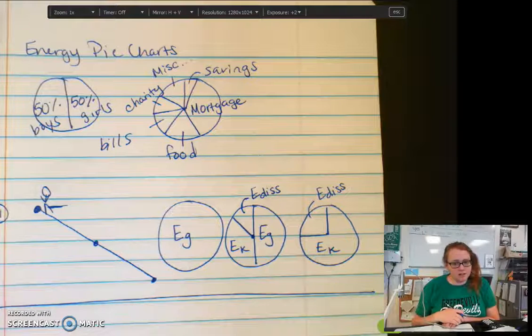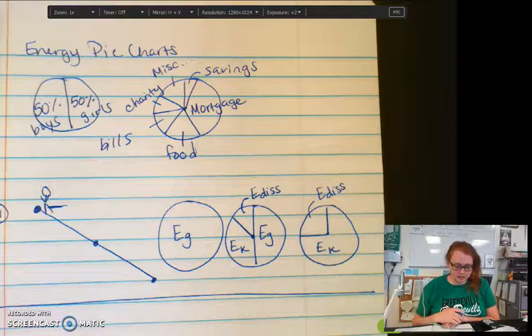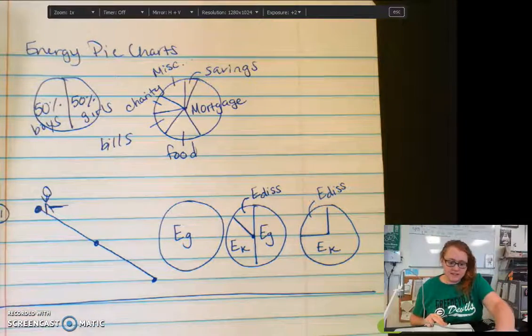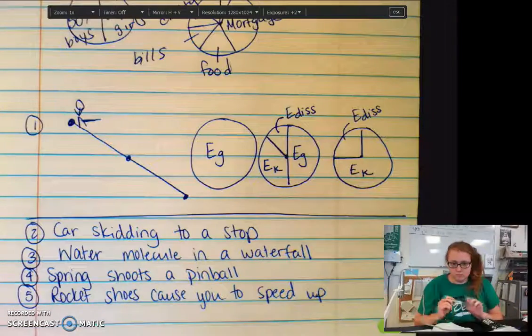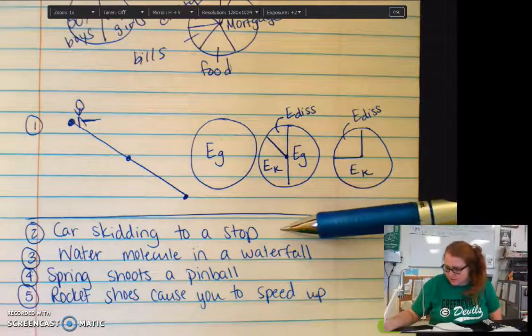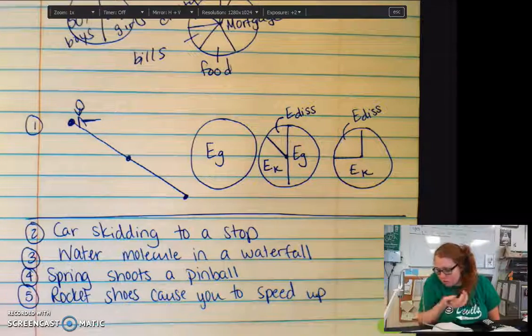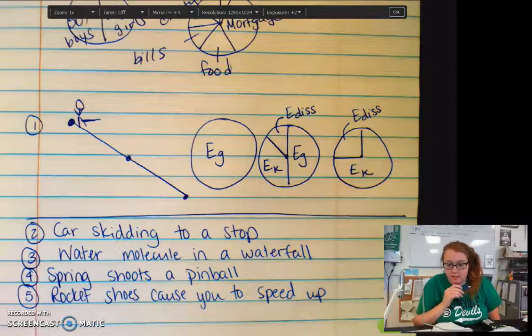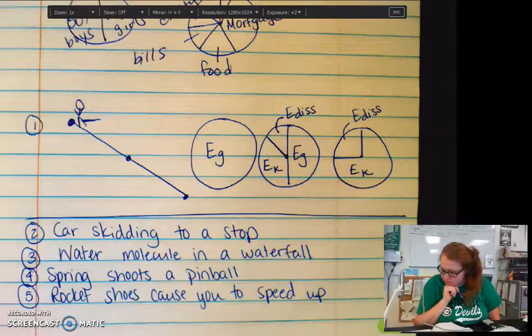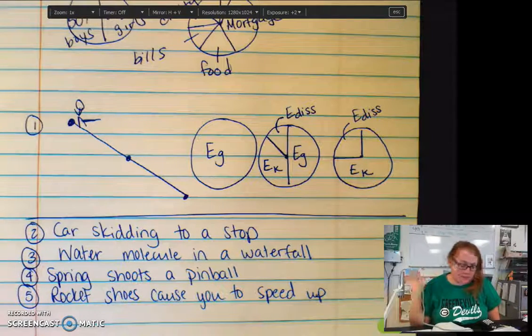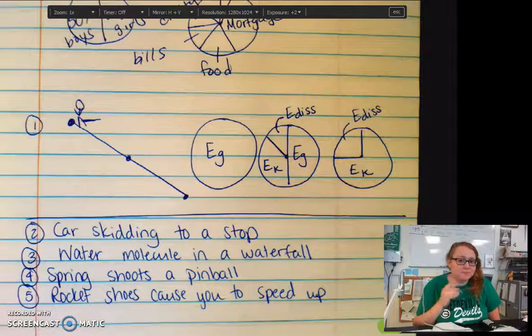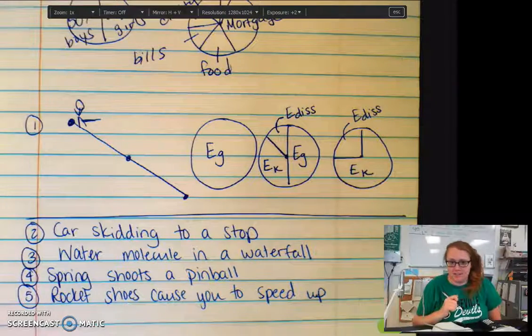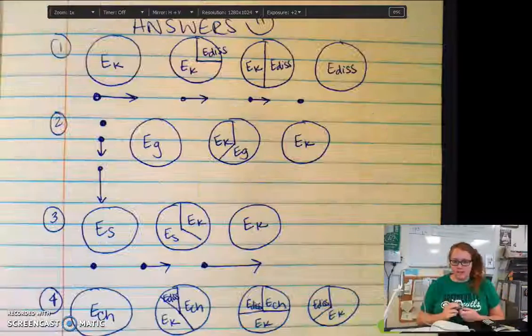So that's how we're going to be looking at pie charts coming up soon, the different types of energy that we have. See if you can do a couple of these examples. I want you to think about the energy involved in a car getting to a stop, a single water molecule falling in a waterfall, a spring that is shooting a pinball, and rocket shoes. You are flying down, we're in the future and you have rocket shoes speeding you up. That's all I have on energy bar charts. The answers are going to show up in just a second. See you in class.